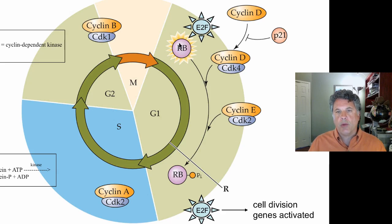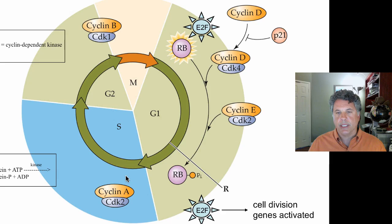But when retinoblastoma protein becomes inactive by phosphorylation, E2F is released and can then allow the cell, by activation of genes, to progress through the restriction point and into the S phase of the cell cycle — that is, the cell will continue to divide.